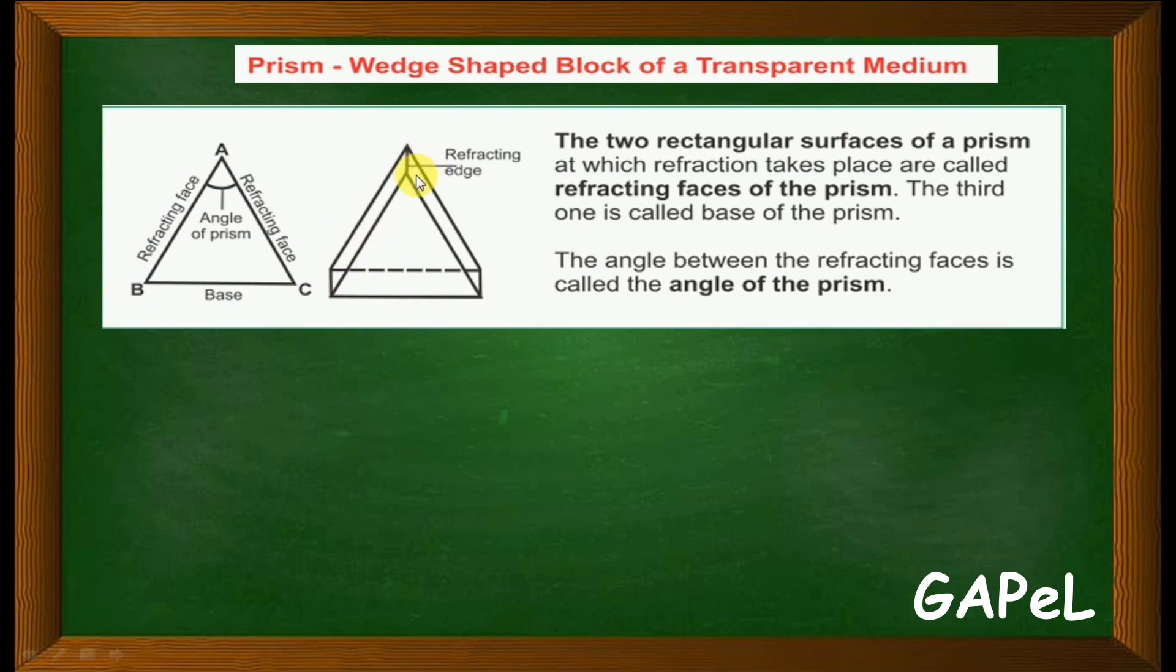This is another reflecting surface, and this is called the reflecting edge. The two rectangular surfaces of a prism at which refraction takes place are called reflecting faces of the prism. These are the reflecting faces and the third one is the base.